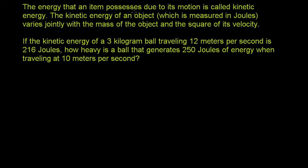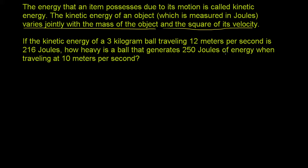The energy that an item possesses due to its motion is called kinetic energy. The kinetic energy of an object, which is measured in joules, varies jointly with the mass of the object and the square of its velocity. If the kinetic energy of a 3-kilogram ball traveling 12 meters per second is 216 joules, how heavy is a ball that generates 250 joules of energy when traveling at 10 meters per second?